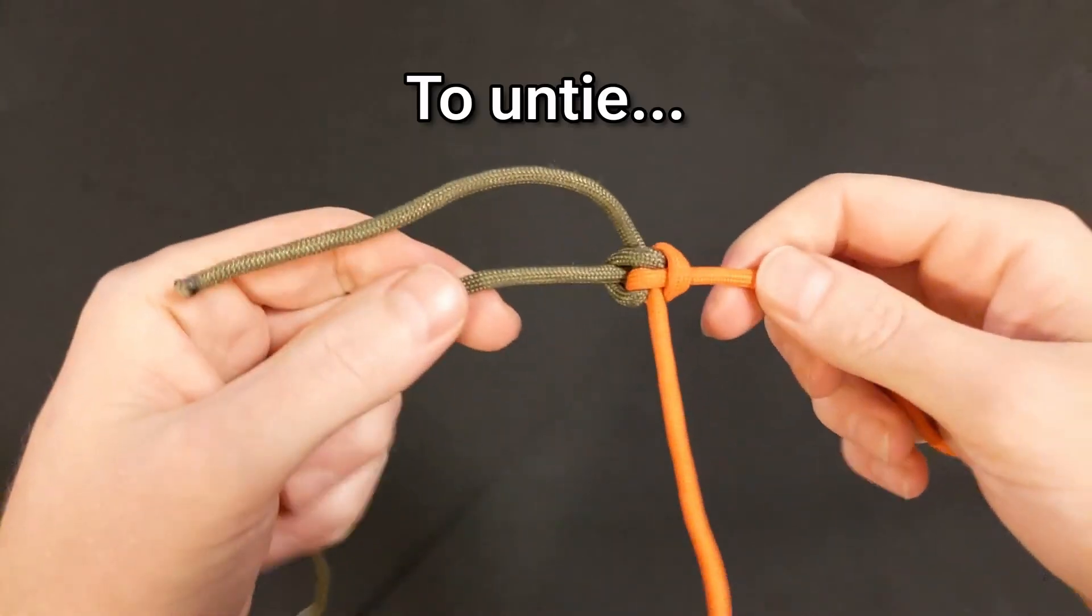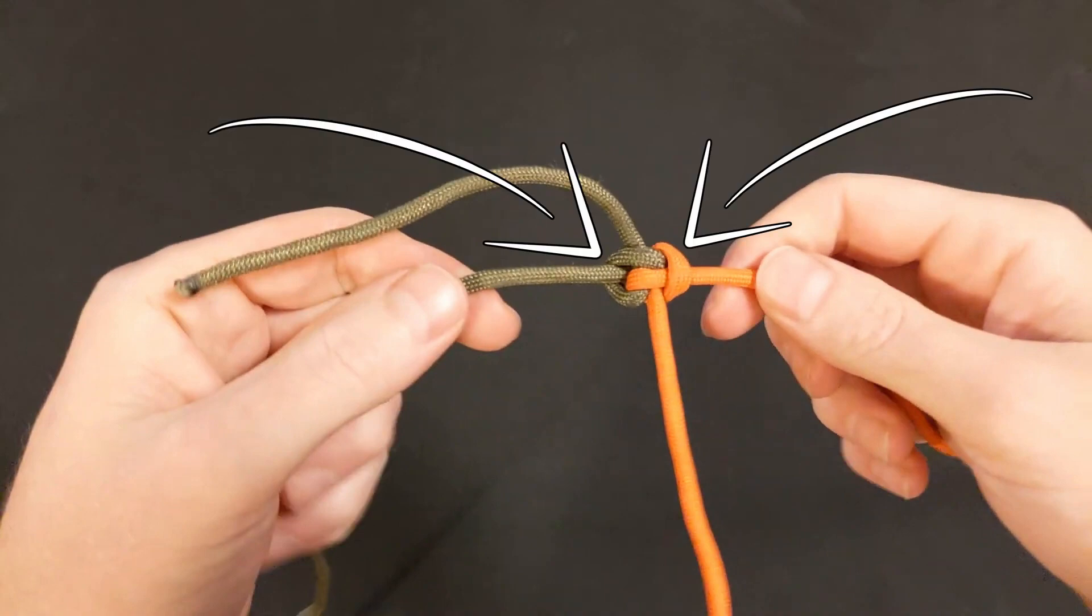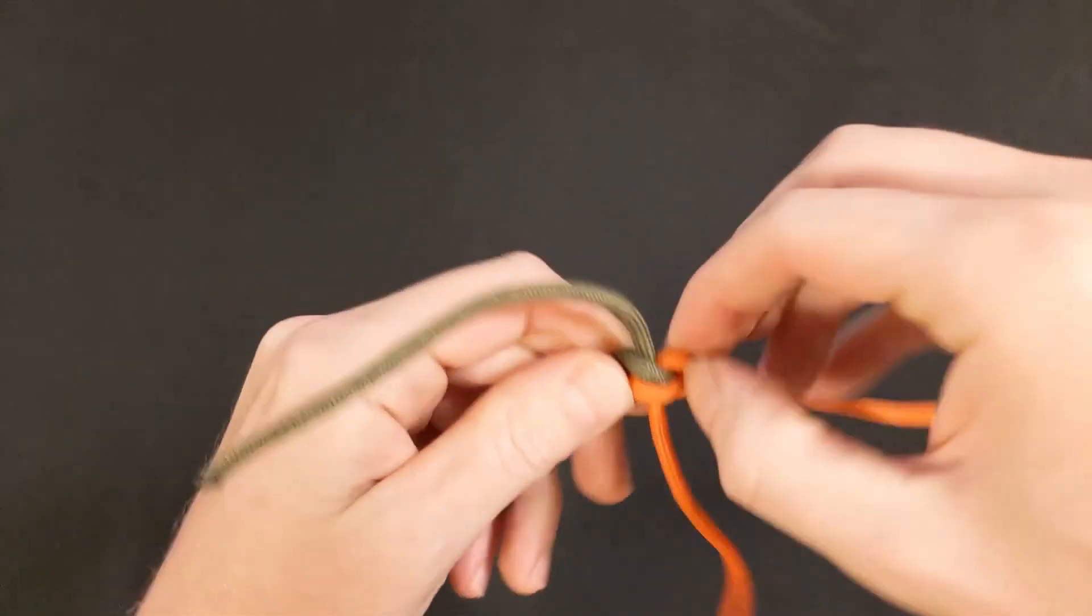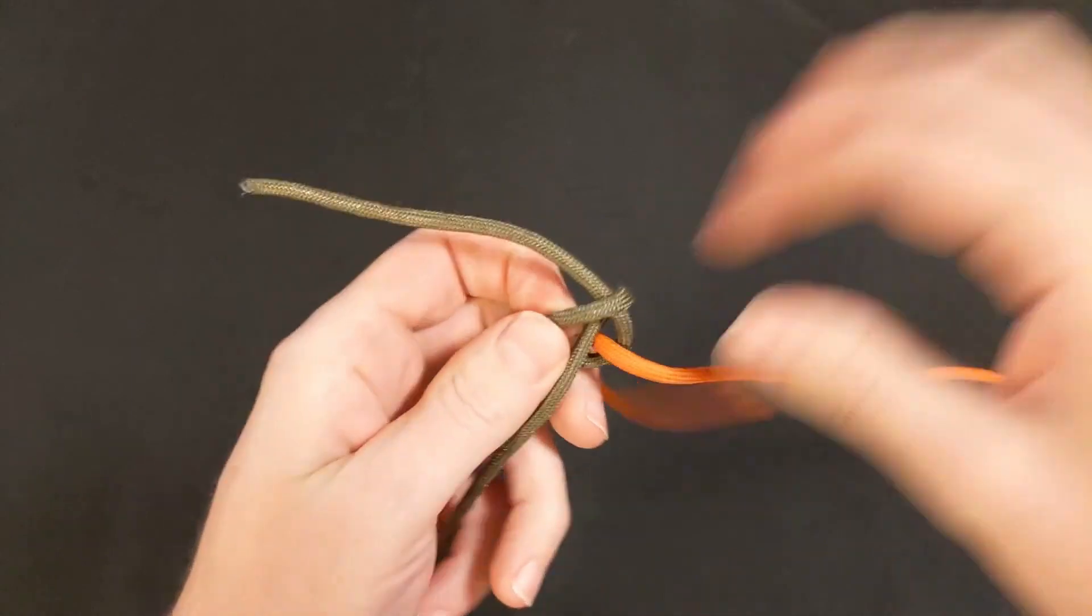To untie the Zeppelin bend, just pry open both of these wings and the knot will loosen with ease, regardless of how heavily the knot has been loaded.